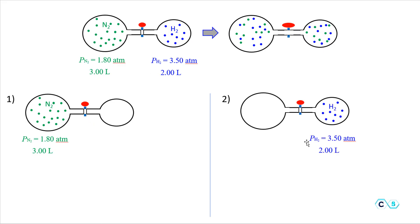Now we consider the hydrogen. If we open the valve, the hydrogen will spread into the other flask as well and will be in a 5-liter container with a new pressure. These two new pressures are going to be the partial pressure of each gas — the partial pressure of nitrogen in the new system and the partial pressure of hydrogen in the new system, both at 5 liters — and we need to add them together.